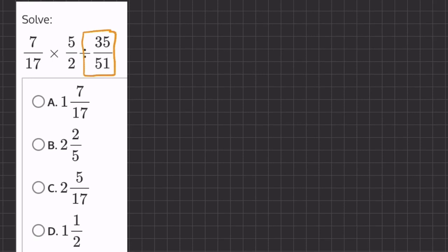So if we take 7 over 17, and we multiply it by 5 over 2, and we multiply this fraction by its reciprocal, so we have 51 over 35.